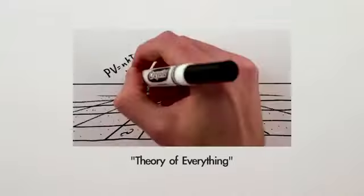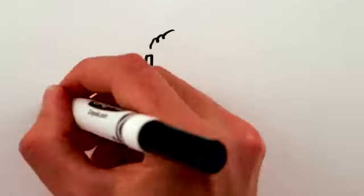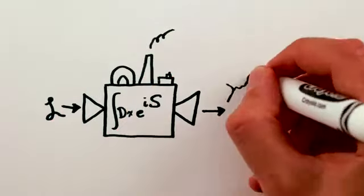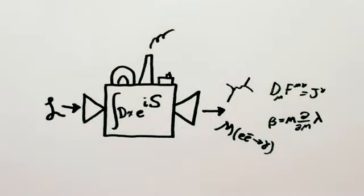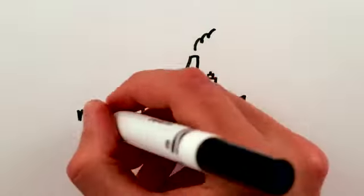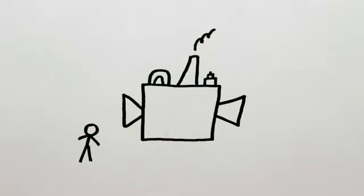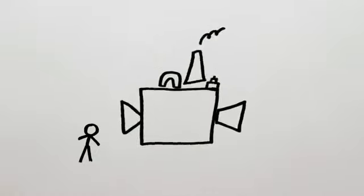You can watch my Theory of Everything video for a quick refresher. We then run this list through a big fancy mathematical machine, which spits out equations that tell us how these particles behave. Except, if we try to include mass as a property for the particles on our ingredients list, the math machine breaks.